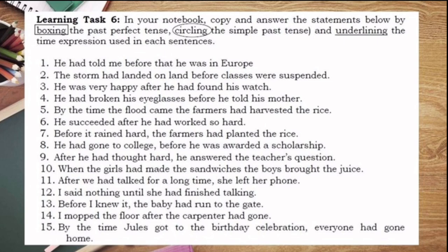For learning task number 6, the instruction is: in your notebook, copy and answer the statements below by boxing the past perfect tense, circling the simple past tense, and underlining the time expression used in each sentence. This is the same as learning task number 2. Copy sentences 1 to 15, identify the past perfect tense by boxing it, encircle the simple past, and underline the time indicator or time expression used in each sentence.